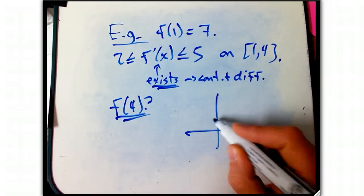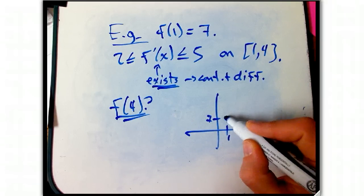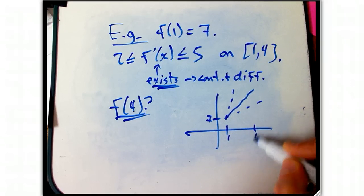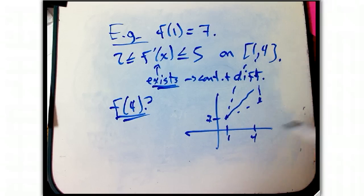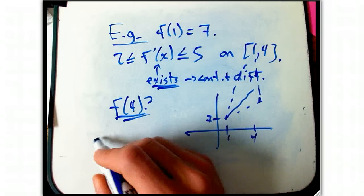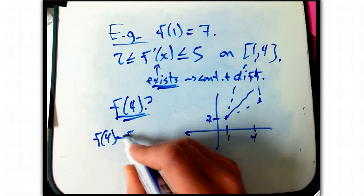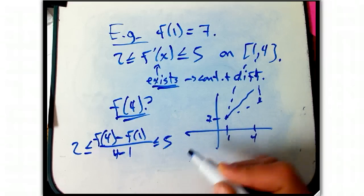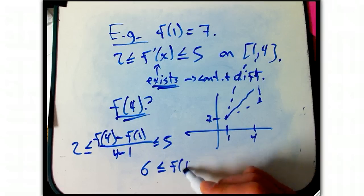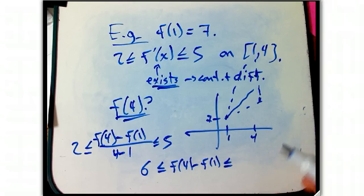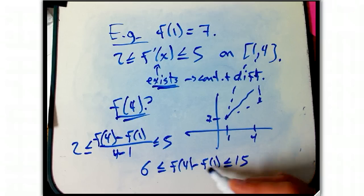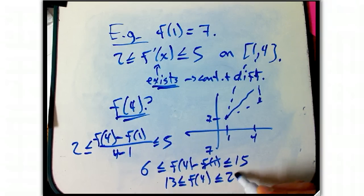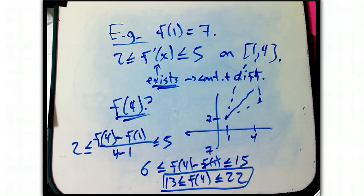Well, we know it started out at height 7. We know it can't be super steep, it can't be bigger than slope 5, but it can't be less than slope 2. So, it's going to go out in this range, and so that should tell us something about the possible values it can have when x equals 4. So, we're just going to take the equation, the inequality, f of 4 minus f of 1 over 4 minus 1. That's the secant slope. We know it's bounded between 2 and 5. Just multiply by 3 everywhere, 6, f of 4 minus f of 1 is between 6 and 15. But f of 1 is known to be 7, and I'm just going to add 7. So I've got to be at least 13 and less than or equal to 22.